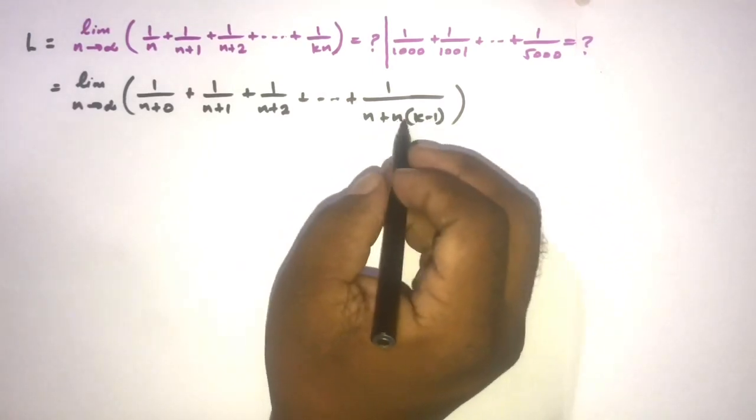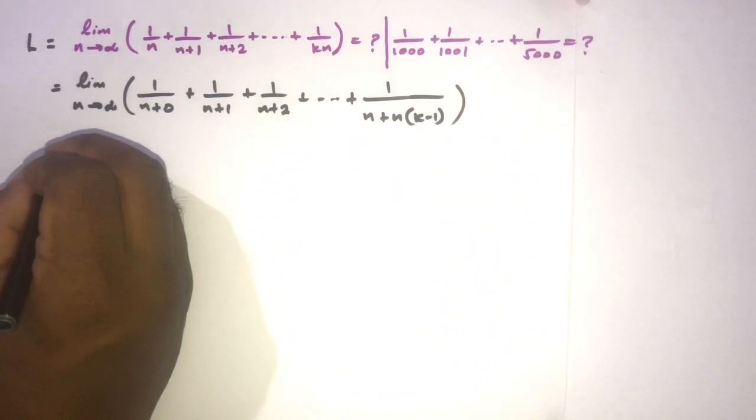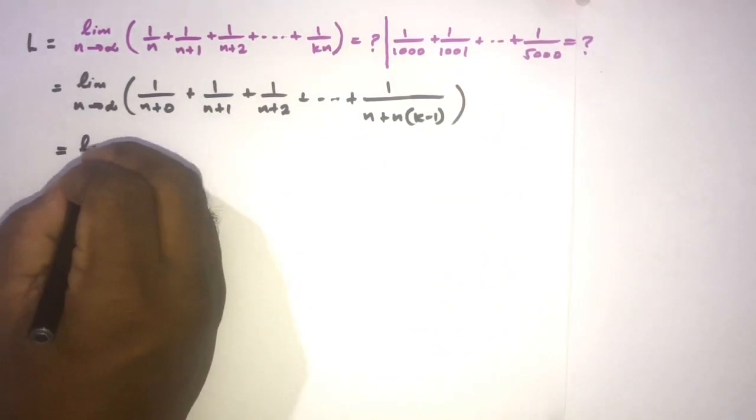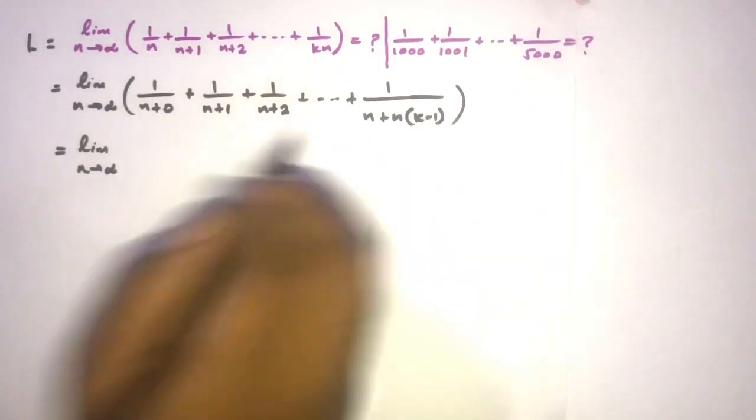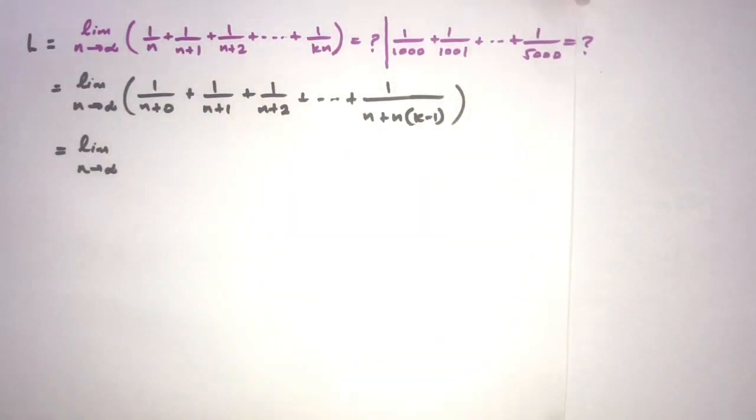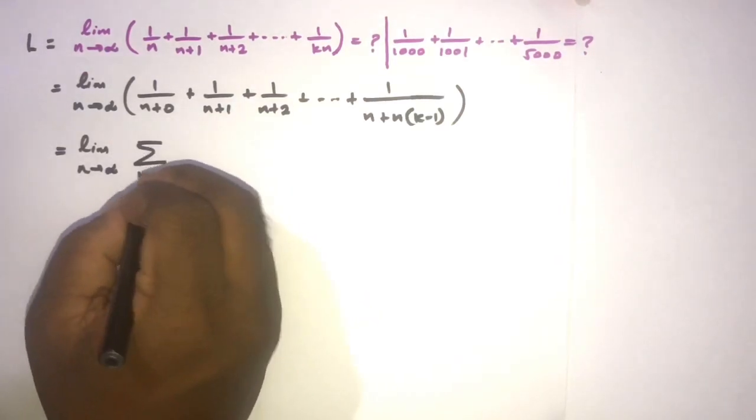Okay, then we can write here limit n approaches to infinity. Now this series we can represent by using sigma notation.